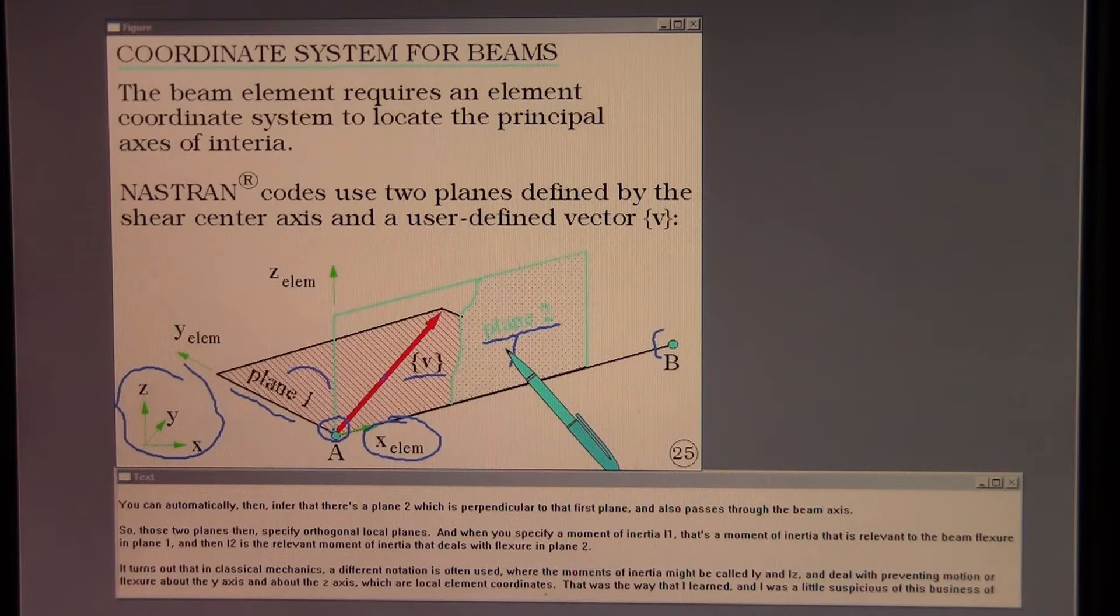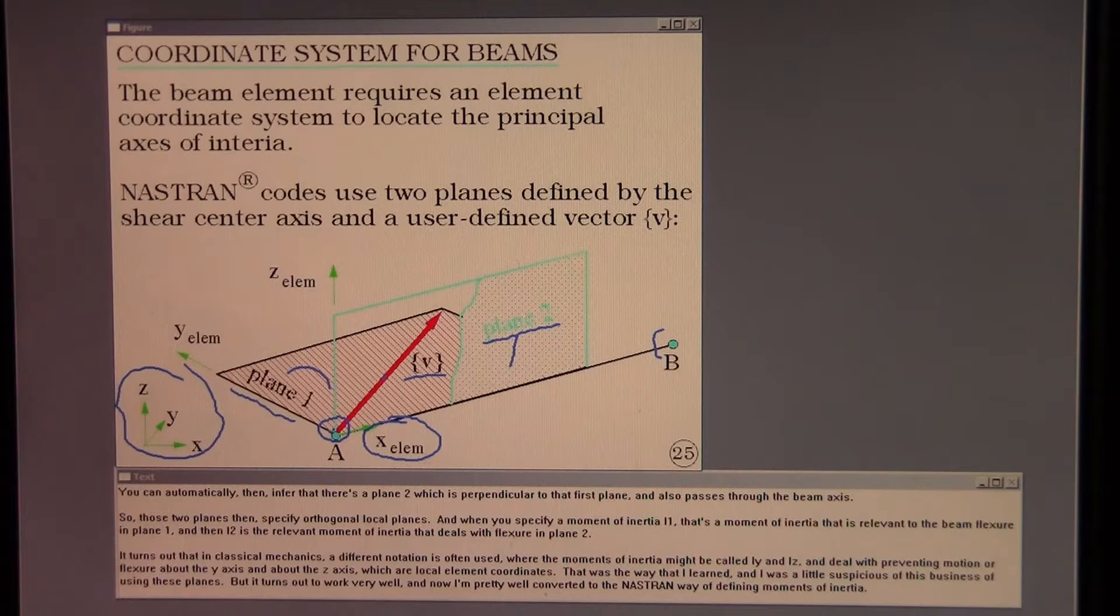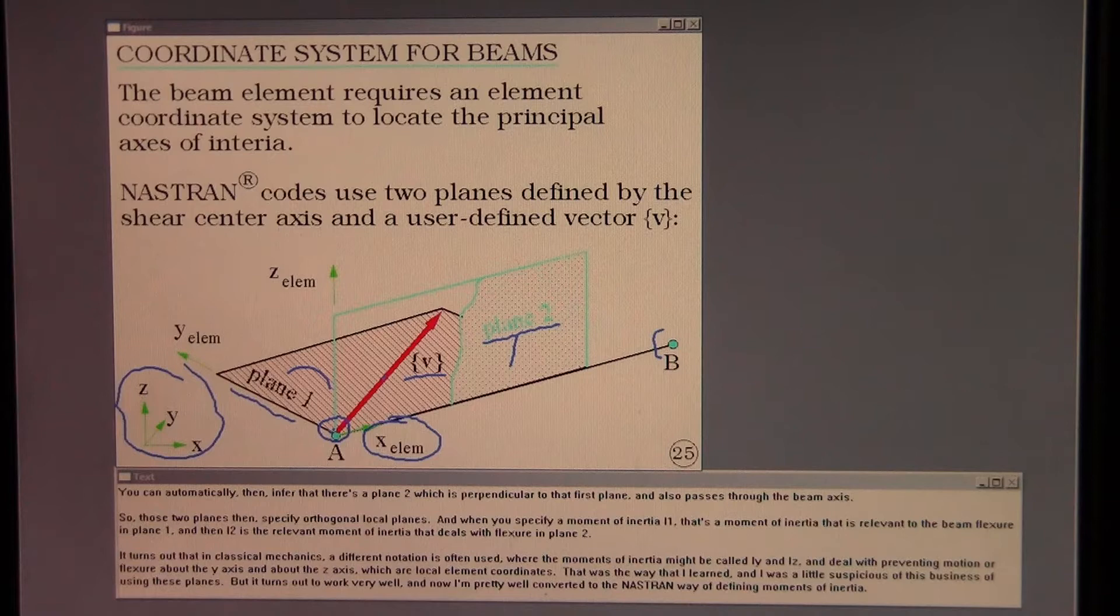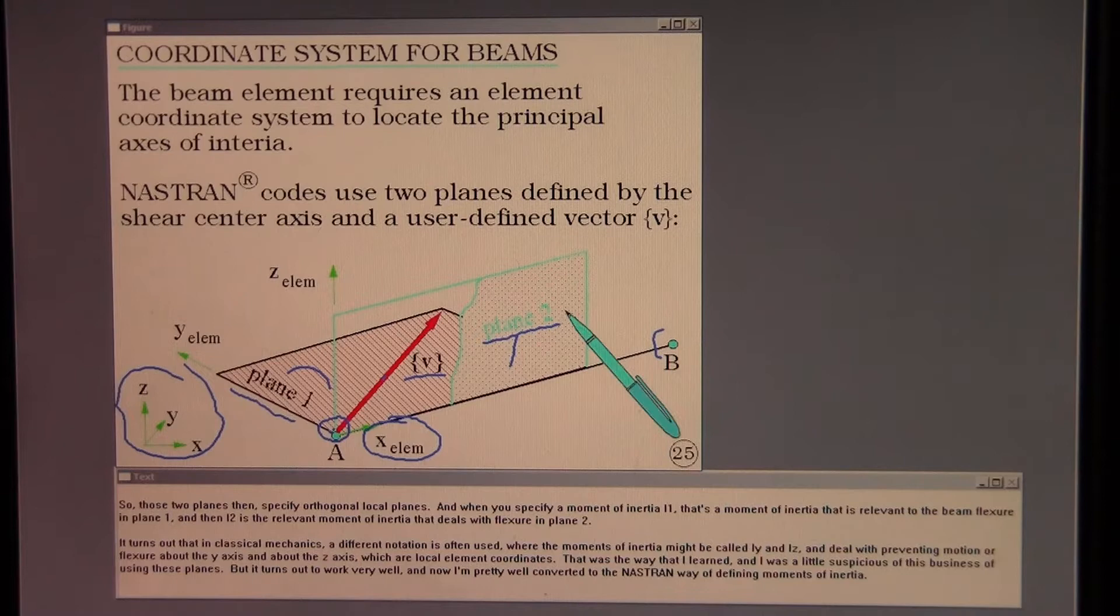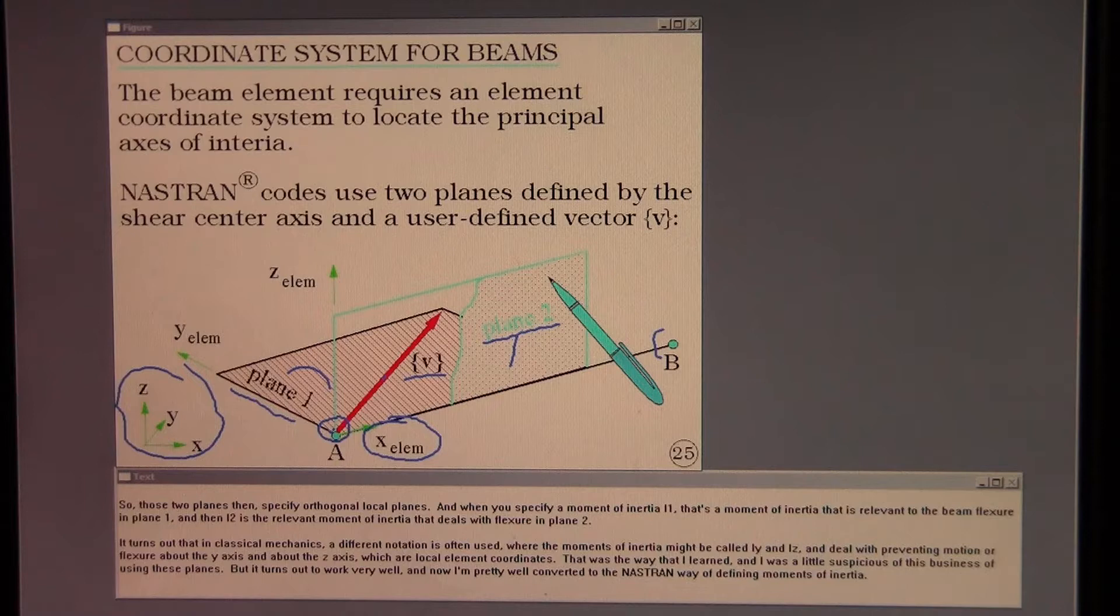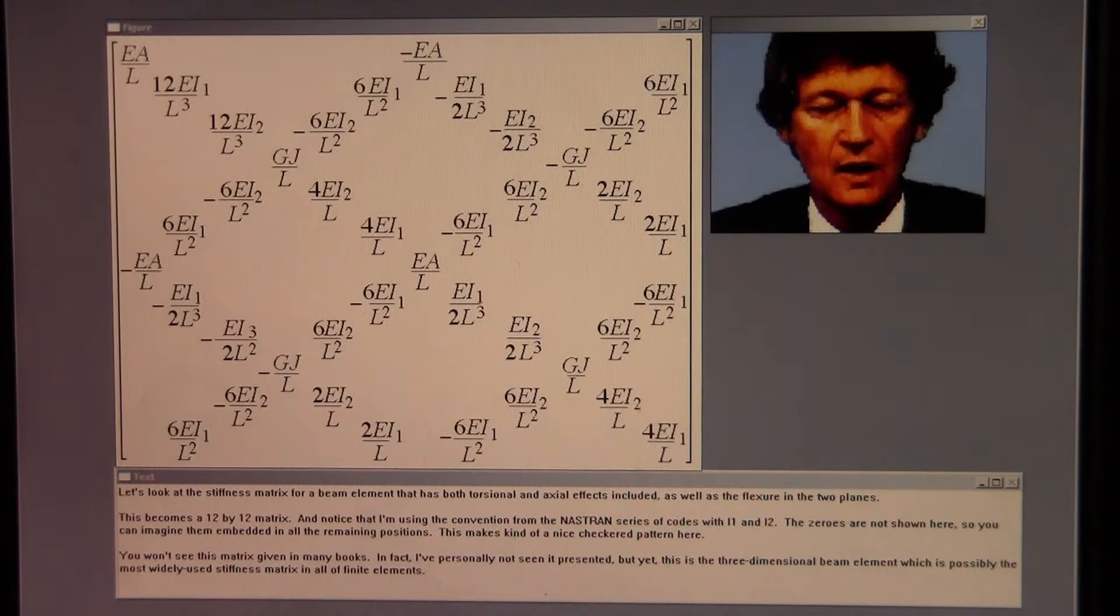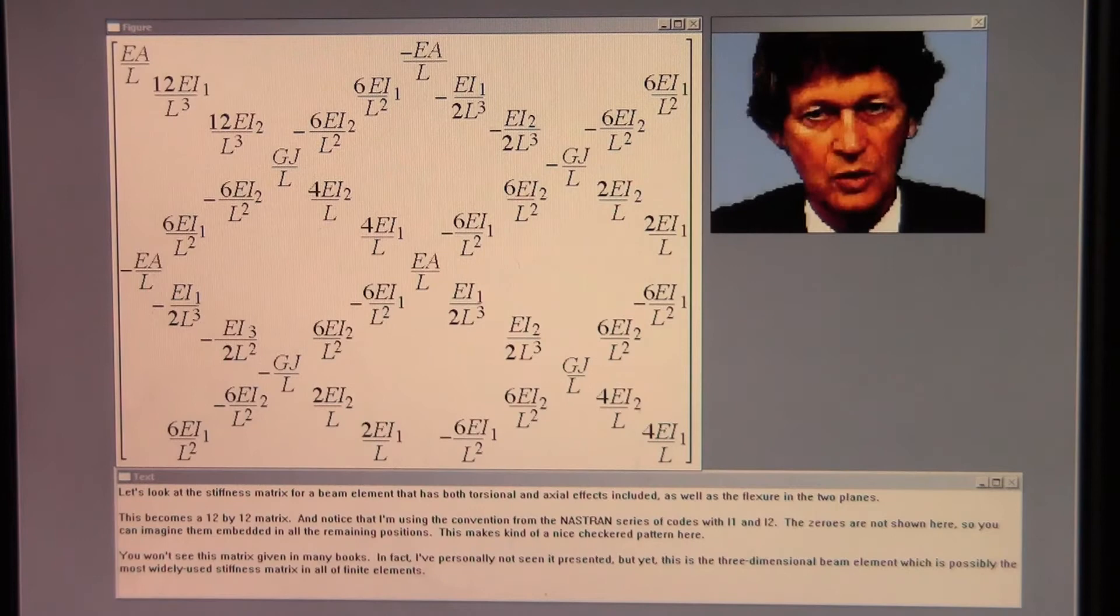It turns out that in classical mechanics a different notation is often used where the moments of inertia might be called IY and IZ and deal with preventing motion or flexure about the y-axis and about the z-axis which are local element coordinates. That was the way that I learned and I was a little suspicious of this business of using these planes but it turns out to work very well. And now I'm pretty well converted to the Nastran way of defining moments of inertia.